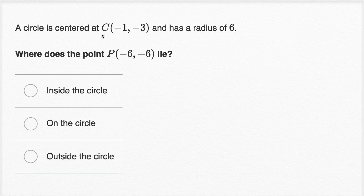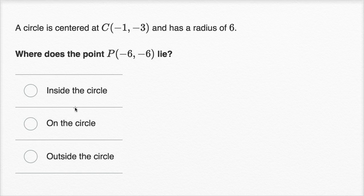A circle is centered at the point C, which has the coordinates negative one, negative three, and has a radius of six. Where does the point P, which has the coordinates negative six, negative six, lie? We have three options: inside the circle, on the circle, or outside the circle.